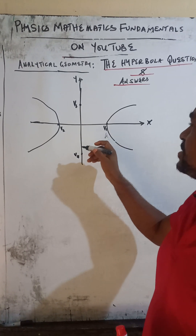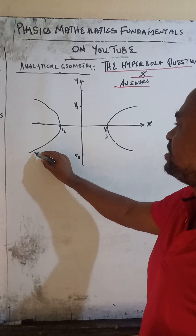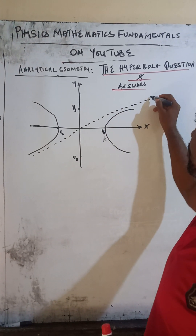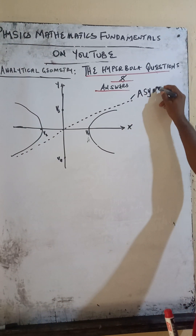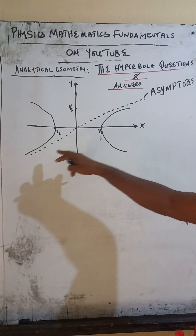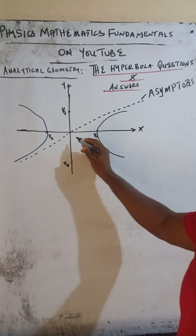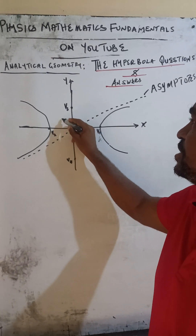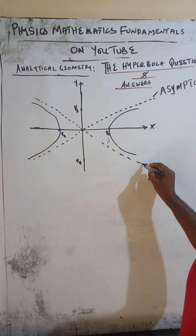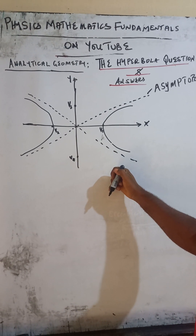There is a particular line that, when drawn through the origin, will not touch the hyperbola. That particular line is called the asymptote. This asymptote has a positive gradient. We can have another asymptote drawn through the origin which is not going to touch the graph of the hyperbola. This other asymptote carries a negative gradient.